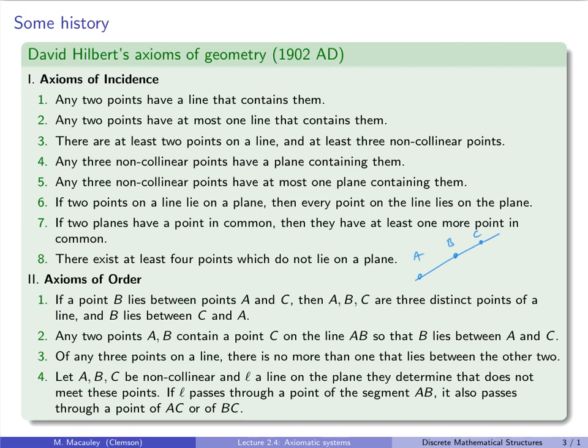And for now, let's start with the first one that says if B lies between A and C, then A, B, and C are three distinct points of a line. That should be clear. But also, B lies between C and A. So the order here matters. Next, any two points A and B contain a point C on the line AB, so that B lies between A and C. So any two points A and B contain a point C on the line between them, so that B lies between A and C. We can always extend, basically says that we can always extend a segment and add a point so B is between A and C.